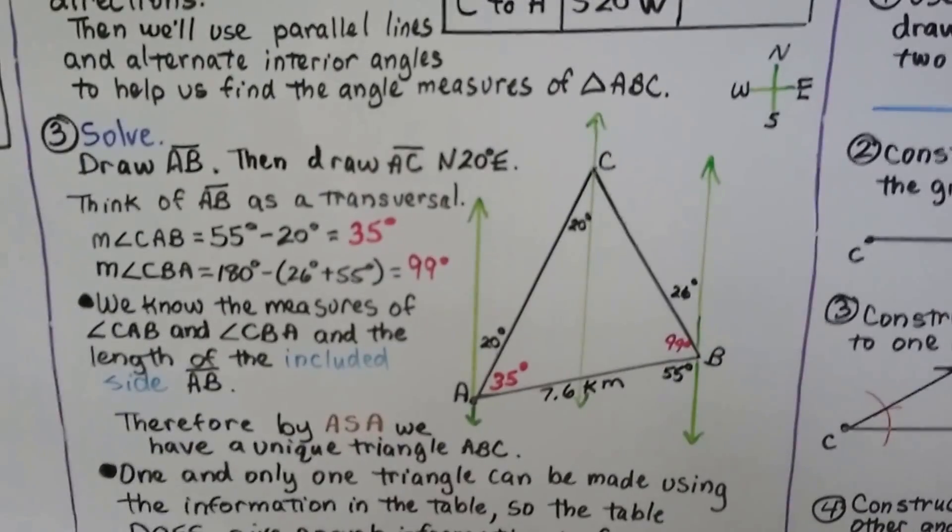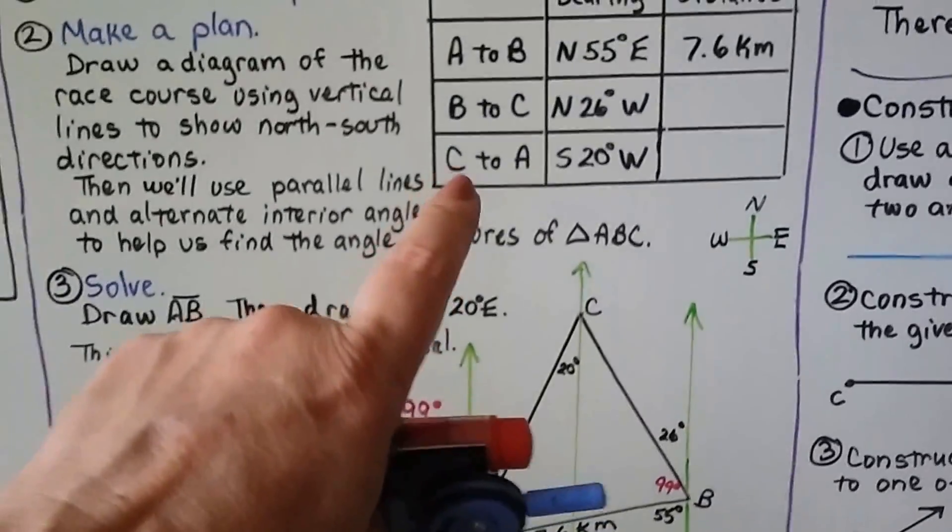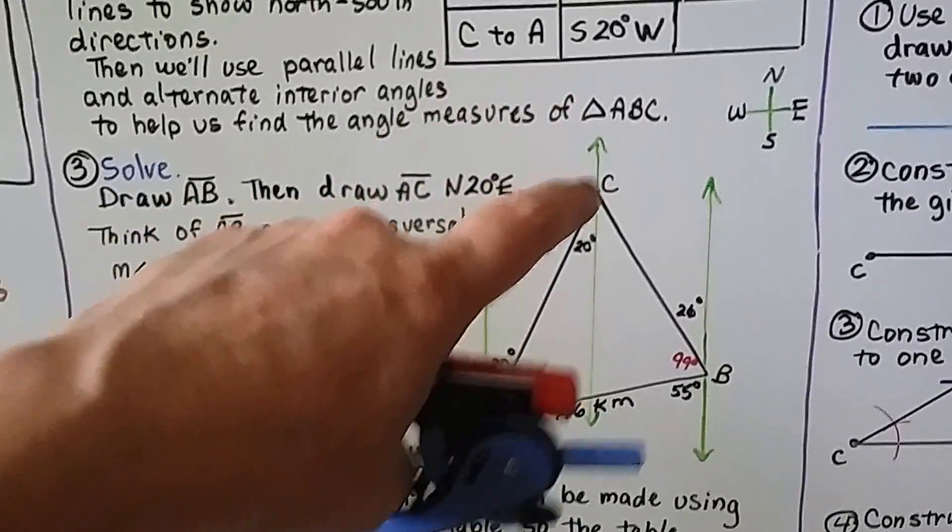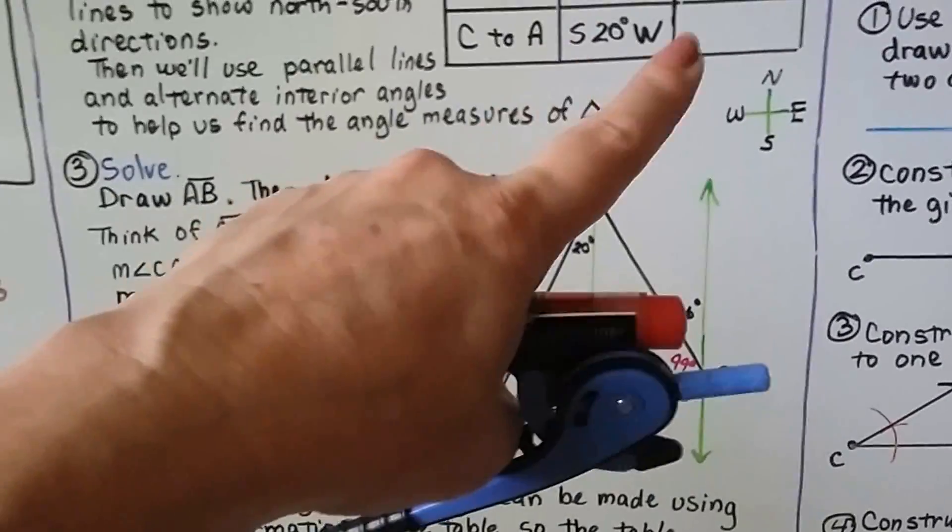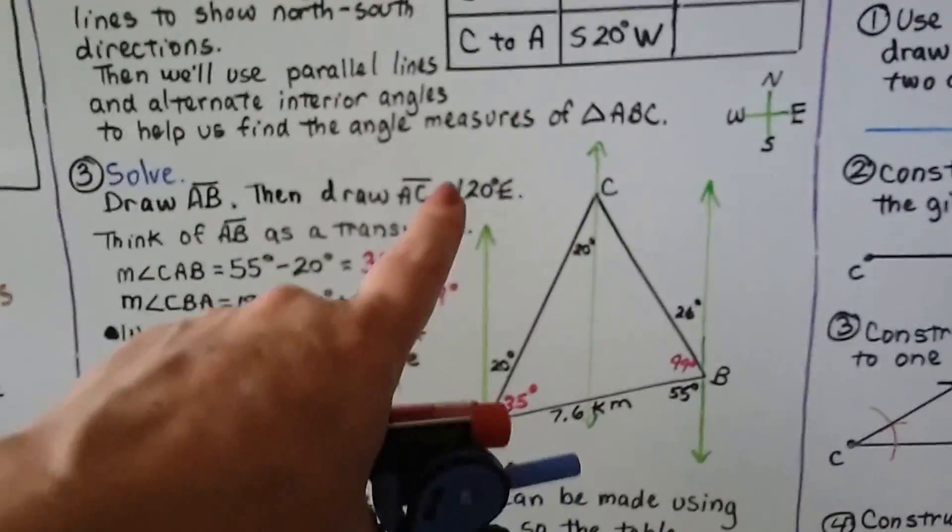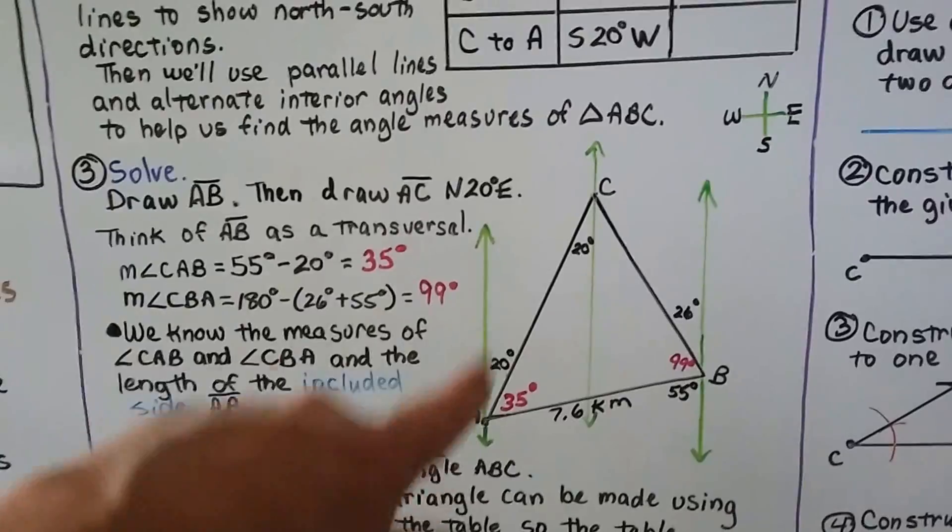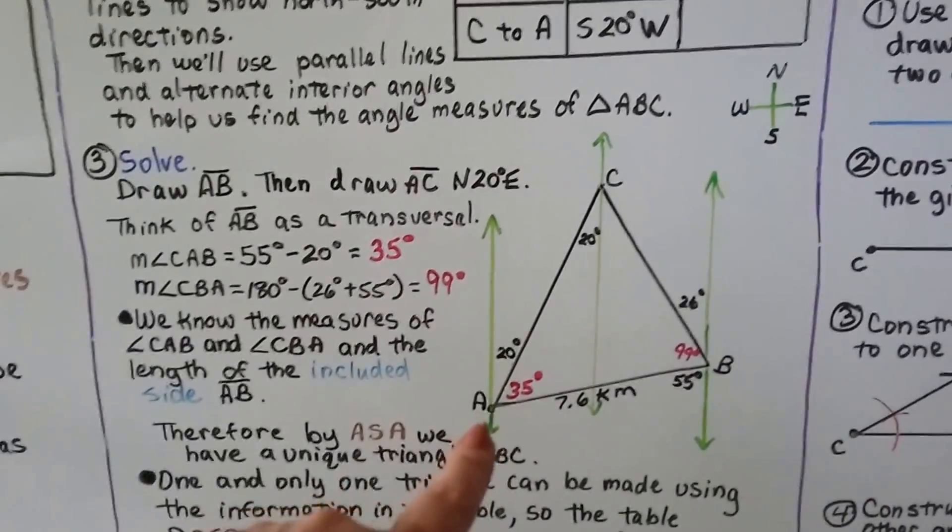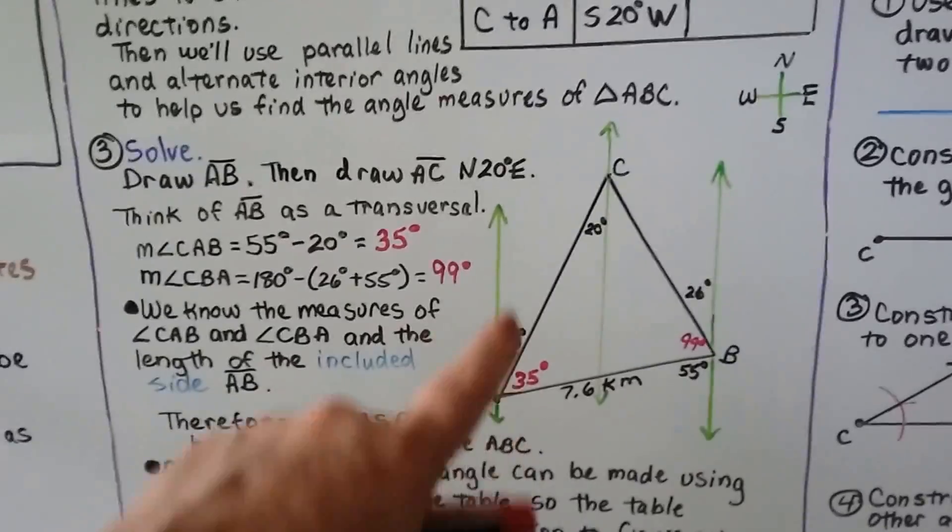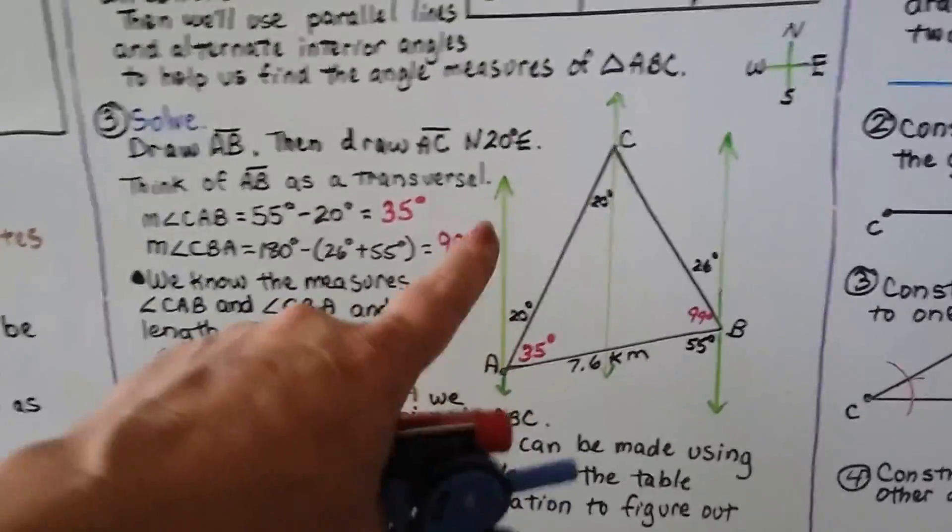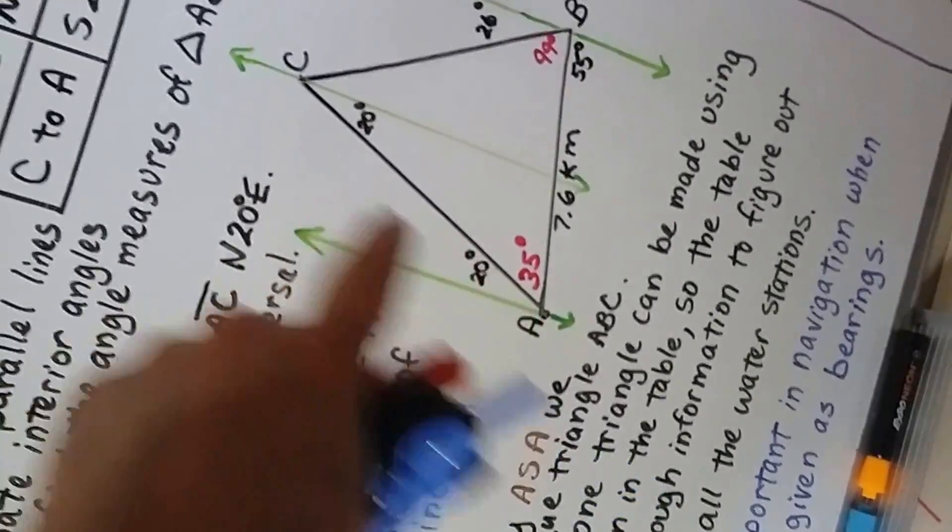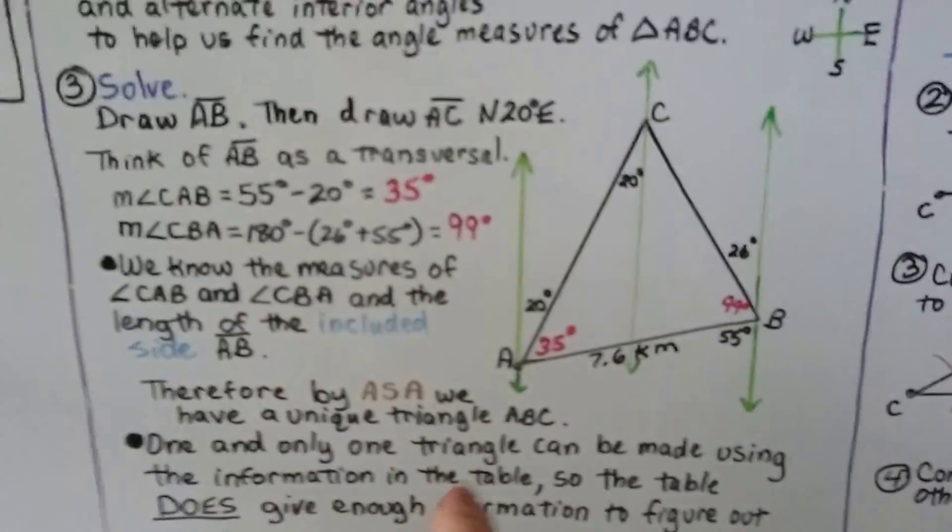And we can draw segment AC. Now that we know where A is, we know AC is south 20 degrees west. So that's from C to A. If we want to go A to C, we got to flip this around and say north 20 degrees east. Because we're going in the opposite direction. We're going to go northeast and make a 20 degree angle using this green line as the bottom of the angle. And we can extend this segment all the way up to the middle parallel line. Now we've got AC and we've got AB, and we could just draw a segment to connect it to B.